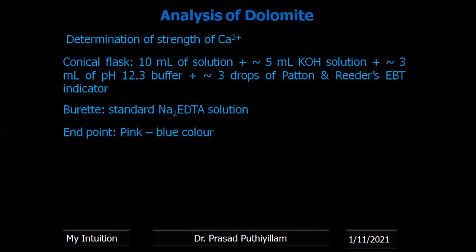Patton-Reeder's indicator, when it forms a complex with calcium ion or any metal ion, is converted to pink color. Once the Patton-Reeder's indicator is set free, it will be blue in color at pH 12.3. Therefore, strength of calcium ion = (molarity × volume of EDTA) / volume of solution (10 ml).